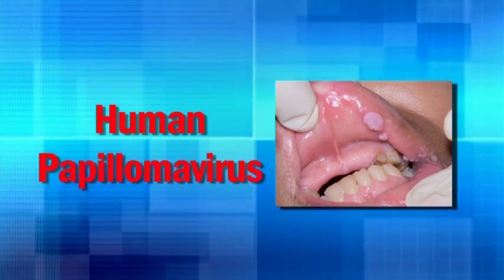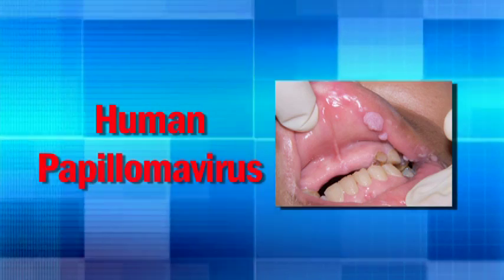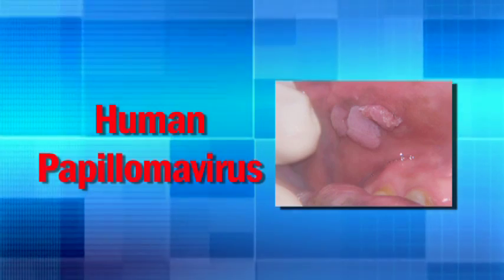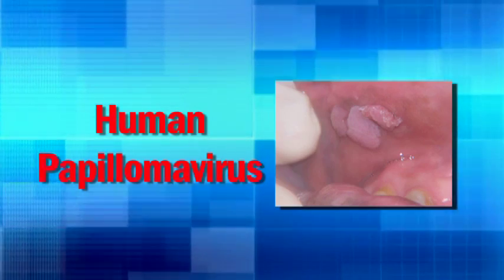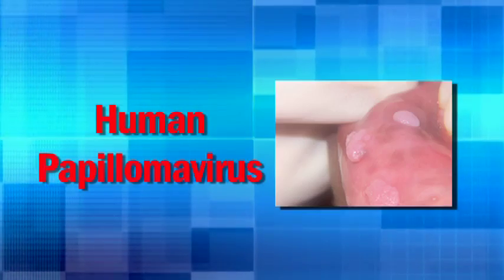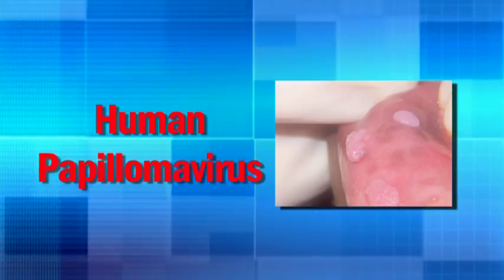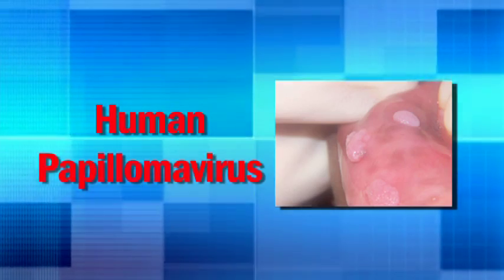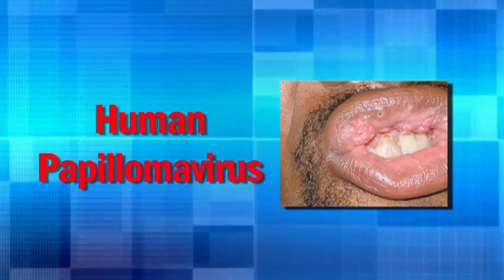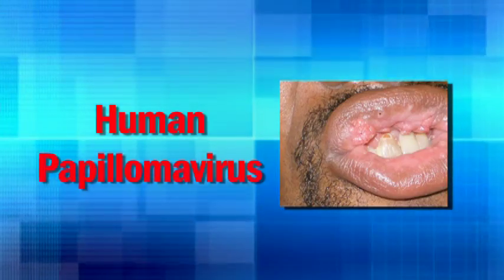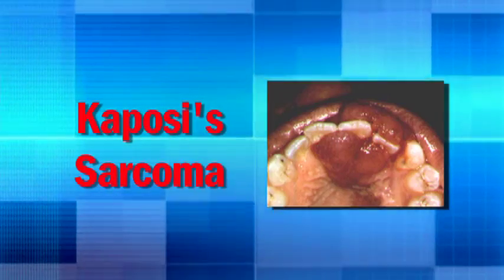Human papillomavirus — the most common forms produce warts on the hands, arms, legs, and other areas of skin. The wart-like growths, called condyloma, appear like small cauliflower-type growths on the skin and may be spiked or raised with a flat surface. These growths are usually painless but can cause some irritation, itching, or burning. Most HPVs of this type are very common, harmless, non-cancerous, and easily treatable.